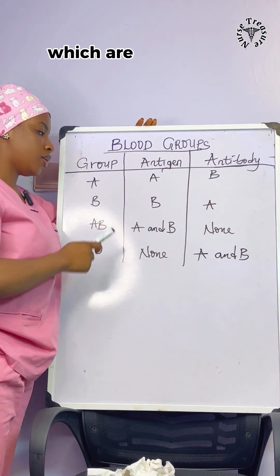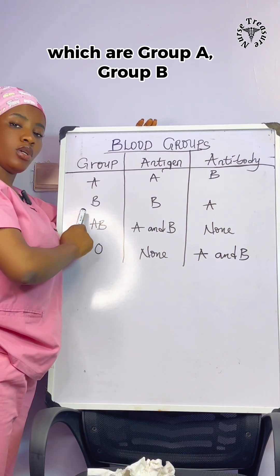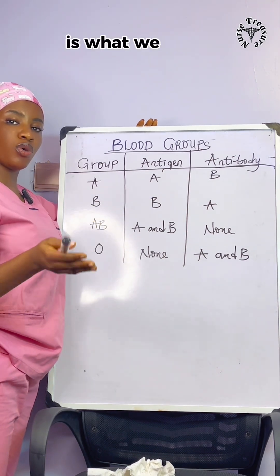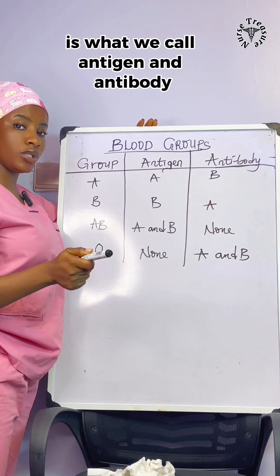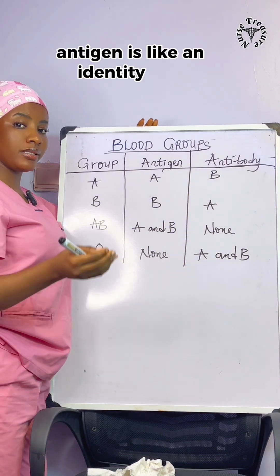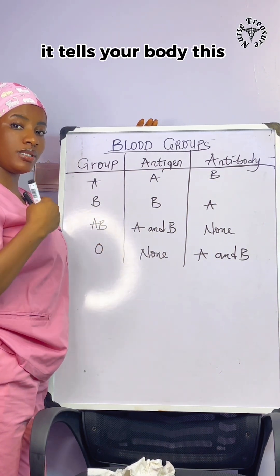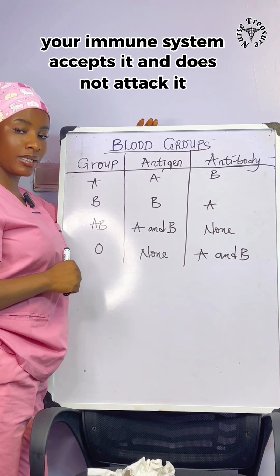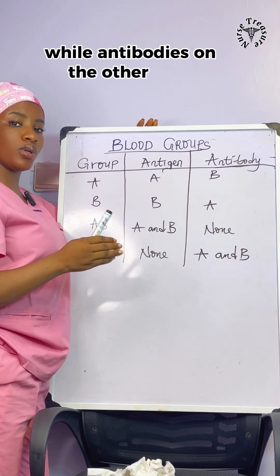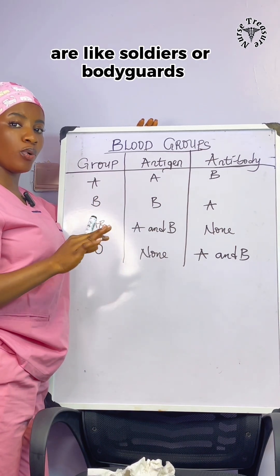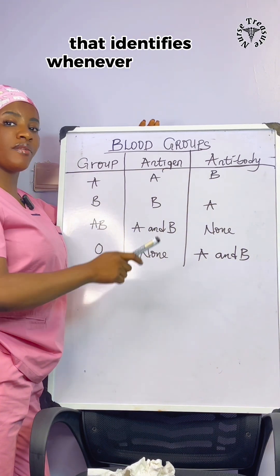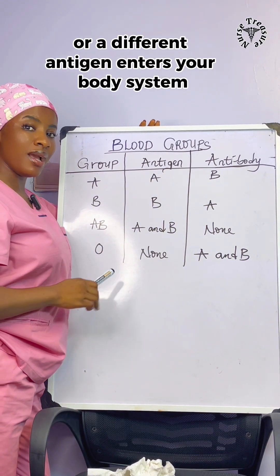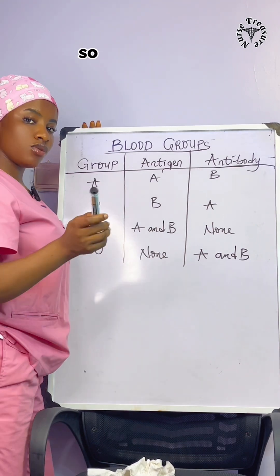We have four major types of blood groups: group A, group B, group AB, and group O. What differentiates these blood groups is what we call antigen and antibody. Antigen is like an identity card — it tells your body 'this is me,' your immune system accepts it and does not attack it. Antibodies, on the other hand, are like soldiers or bodyguards that identify whenever a foreign body or a different antigen enters your body system and attack it automatically.